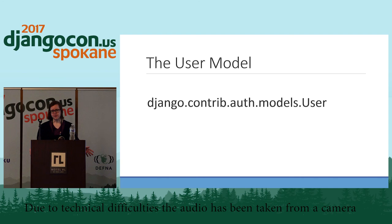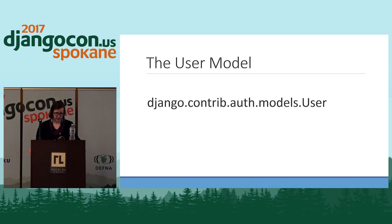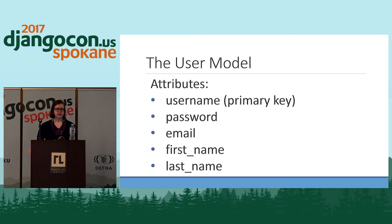Let's start by talking about what the user model is. It's part of Django's authentication system, which is set up for you automatically when you create your project. The user model is kind of the core of Django's authentication system, and it represents the people who will be using your app. It is also set up automatically for you when you make your first migration, so it's really convenient. Out of the box, Django provides us with some great attributes and functionality of the user model.